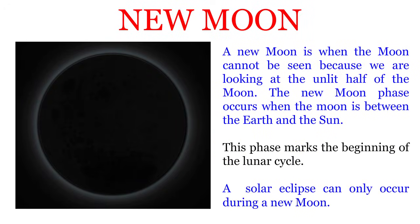A New Moon is when the Moon cannot be seen because we are looking at the unlit half of the Moon. The New Moon phase occurs when the Moon is between the Earth and the Sun. This phase marks the beginning of the lunar cycle. A solar eclipse can only occur during a New Moon.